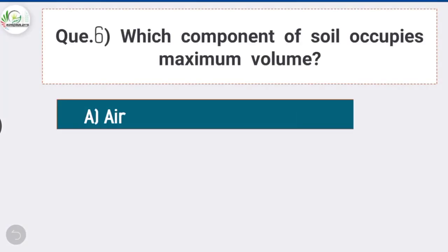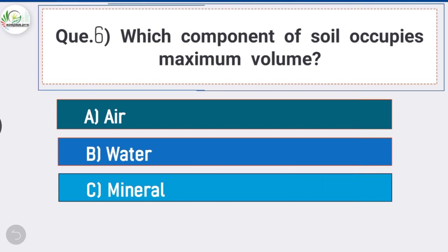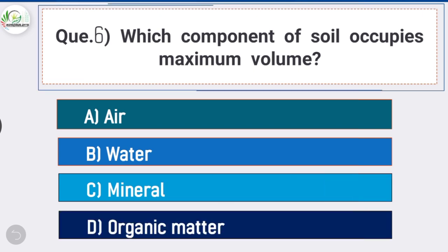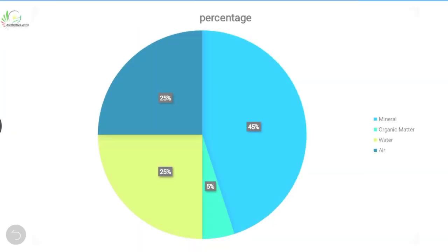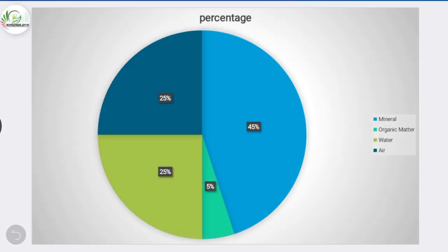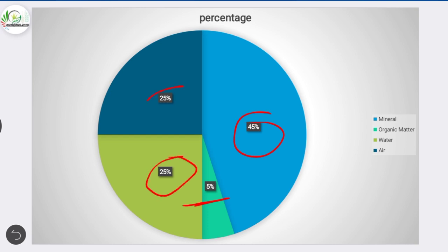Question number six: which component of soil occupies maximum volume? Answer is option C, mineral. Minerals contribute 45% of soil volume, organic matter contributes 5%, and air and water each contribute 25% of soil volume.